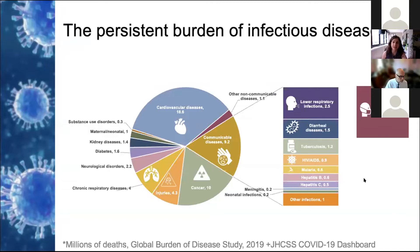Despite the availability of highly effective drug therapies for HIV, TB, hepatitis C, and malaria, together they killed over 3 million people a year in 2019. Vaccine-preventable illnesses like meningitis, whooping cough, measles, typhoid, and hepatitis B still kill around a million a year. Diarrheal diseases, which can largely be prevented with proper sanitation and hygiene, killed another 1.5 million. Other respiratory infections with similar risk factors to COVID-19 kill around 2.5 million. Achieving further and equitable reductions in the burden of infectious diseases remains a major public health goal going forward, even after COVID.